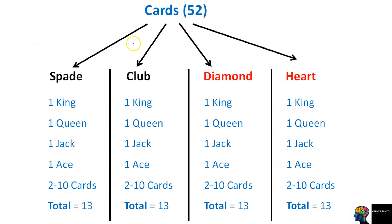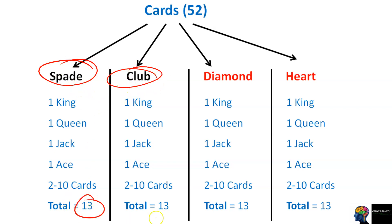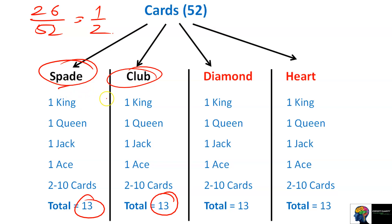Some questions ask: find the probability of getting a black color card. Spade and Club are black color. So we take 13 plus 13, which makes 26, giving 26 upon 52, which equals 1 by 2. Because the question only says black color — that could be spade or club. A jack of spade is black; a two of club is also black. So we join both groups.